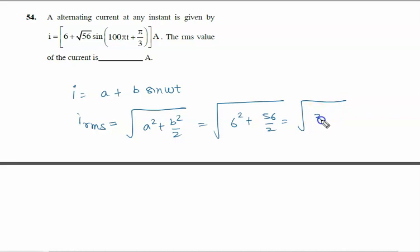So this is 36 plus 28, which equals 64. The square root of 64 gives 8 amperes. The right answer to this problem is 8 amperes.